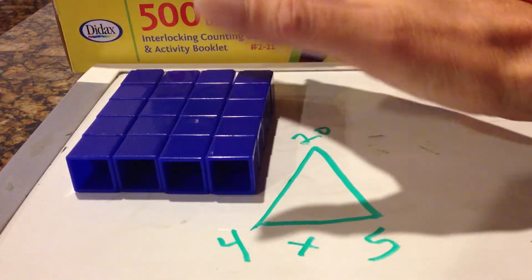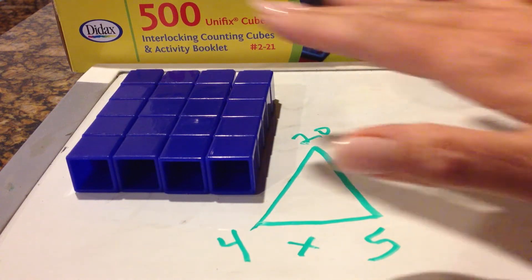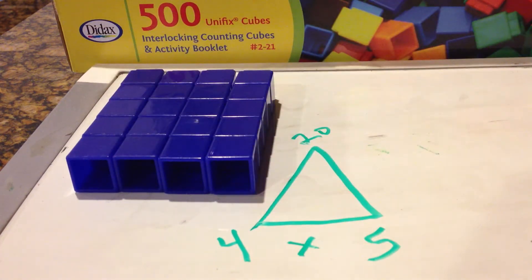a fact family is always, forever, with whole real numbers, going to actually look like a rectangle or a square.